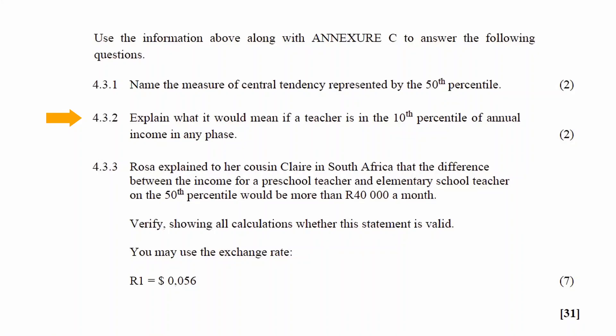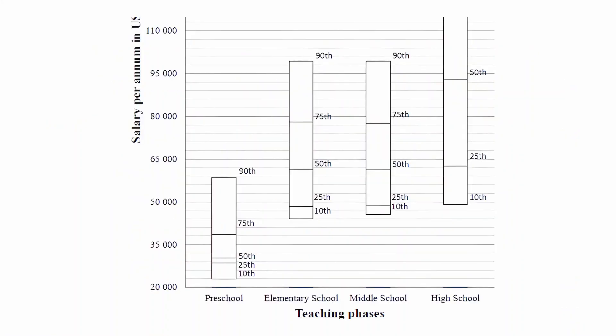In question 4.3.2 you have to explain what it would mean if a teacher is in the 10th percentile of annual income in any phase. If a teacher is in the 10th percentile, it means that teacher earns the same or less than 90 percent of all other teachers in that phase. Alternatively, 10 percent of teachers earn less than or the same as that teacher.